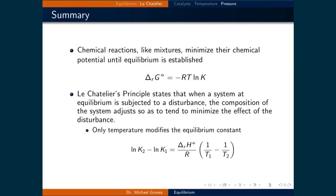Chemical reactions, like mixtures, minimize their chemical potential until equilibrium is established. The equilibrium constant can be calculated according to ΔrG° = -RT ln K.